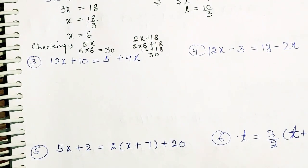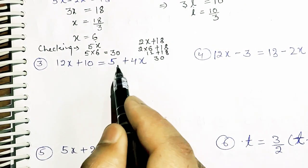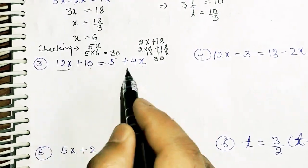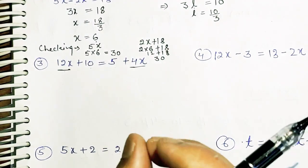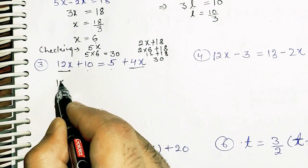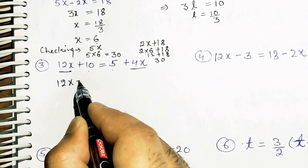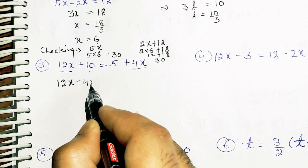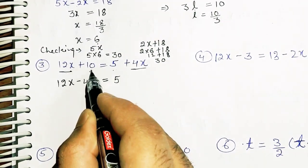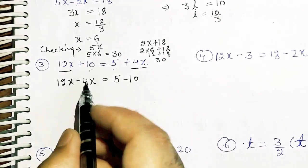Next: 12x plus 10 equals 5 plus 4x. You have to look for like terms. 12x and 4x are like terms with the same variable, and 10 and 5 are constants. 4x is in plus on the RHS, it will move to the LHS as minus 4x. What remains on the RHS? 5. What is the sign of 10? It is plus, so it will move to the RHS as minus.